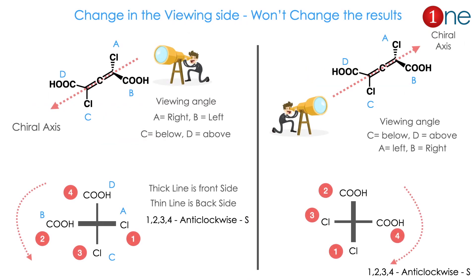To avoid confusion, here the same compound is shown with a changed viewing side. In the first view, chlorine is on the right side and COH is on the left. The configuration comes out 1, 2, 3, 4 — anti-clockwise, which is S. Suppose one person chooses the opposite side — COH is above the plane and Cl is below the plane. If you assign priority from the front side and redo the analysis, you again get 1, 2, 3, 4 — anti-clockwise, S direction. So the viewing side does not matter; you can choose by your own interest and remain consistent.